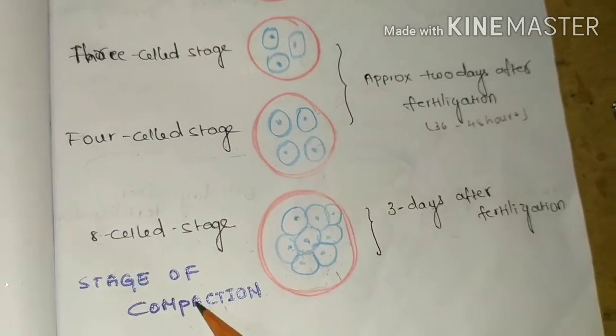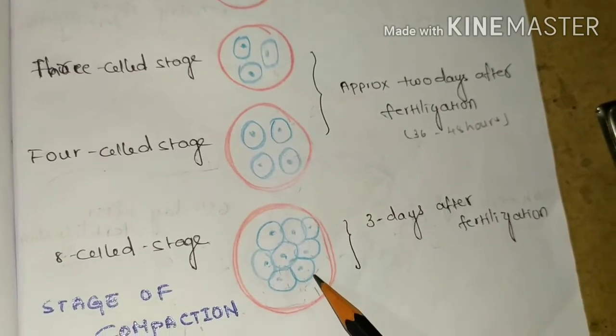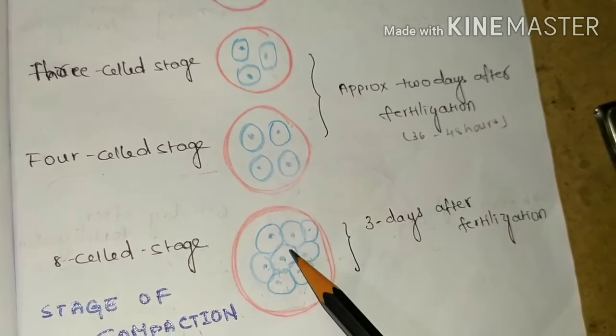This stage is called stage of compaction and this is observed three days after fertilization. The outer cells form tight junctions between them and they become polar, whereas inner cells form gap junctions between them.